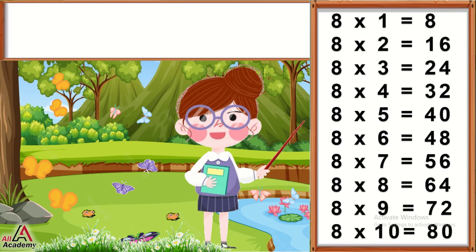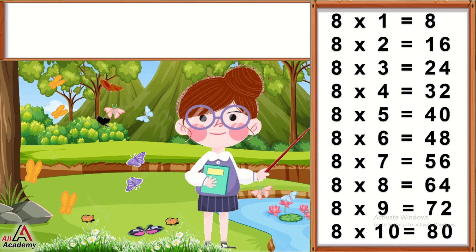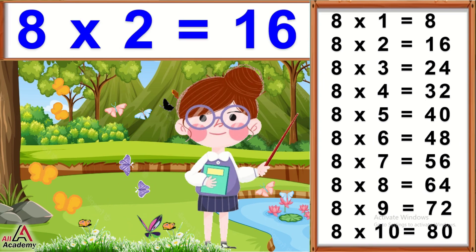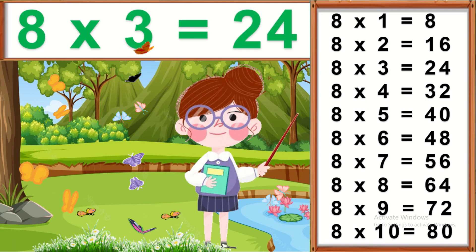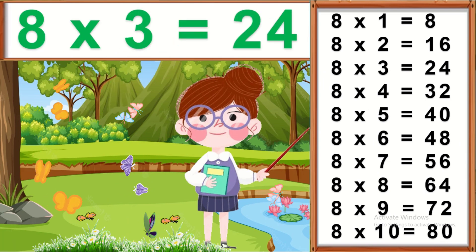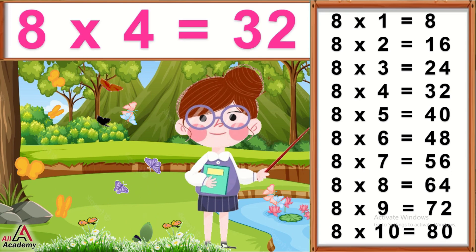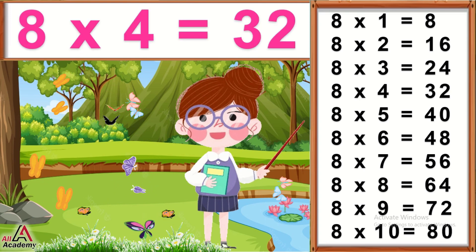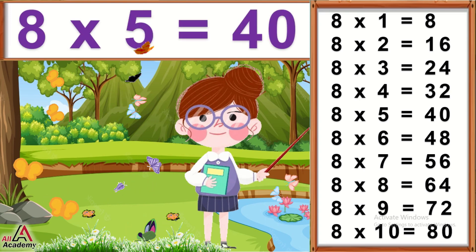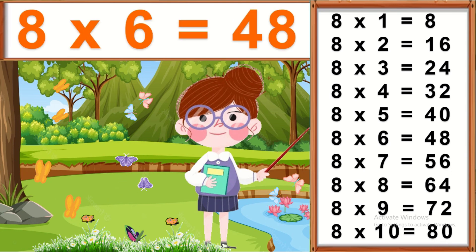8 ones are 8. 8 twos are 16. 8 threes are 24. 8 fours are 32. 8 fives are 40. 8 sixes are 48.